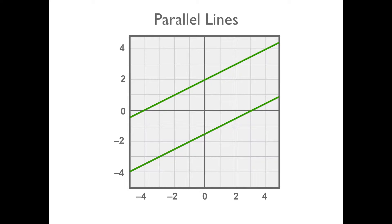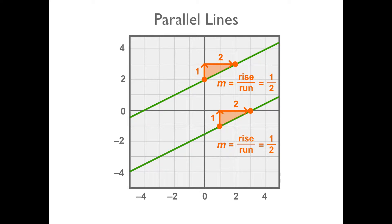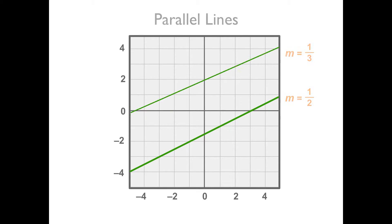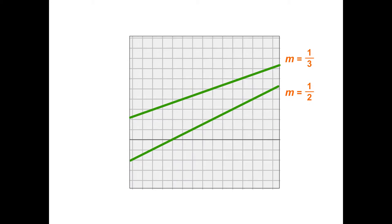If we look at these two parallel lines on a coordinate plane, the slope, or rise over run, of each line is 1 over 2, or simply 1 half. Both lines rise one unit vertically for every two units that they run horizontally, so they will always remain the same distance apart and will never intersect. If these slopes were not the same, the lines would eventually intersect.